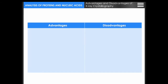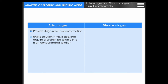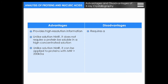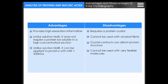What are the advantages and disadvantages of X-ray crystallography? Advantages: it provides high-resolution information; unlike solution NMR, it does not require the protein to be soluble in a highly concentrated solution; and unlike solution NMR, it can be applied to proteins with molecular weight greater than 200 kDa. Disadvantages: it requires a protein crystal; it cannot be used with amyloid fibrils; crystal contacts can distort protein structure; and it cannot be used with very flexible molecules.